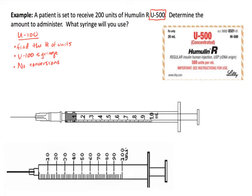With U500, it's a little bit different. U500 is a significantly more concentrated type of insulin — specifically, we are dealing with 500 units per mL. So when we're dealing with U500, that's 500 units per one mL.